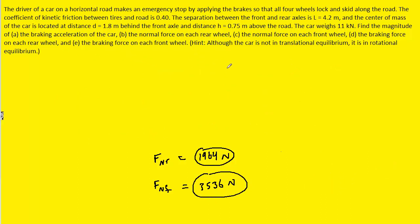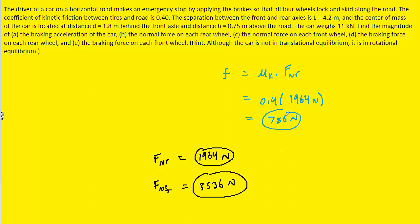For part D, the braking force on each rear wheel is the kinetic frictional force acting on one rear wheel — the coefficient of kinetic friction multiplied by the normal force on one rear wheel. With a coefficient of 0.4 and Fnr already determined, this works out to approximately 786 N, which is the correct answer to part D.